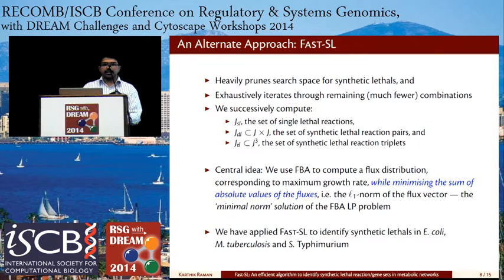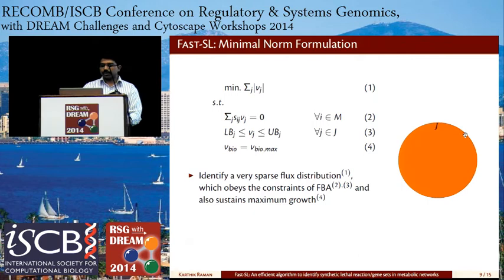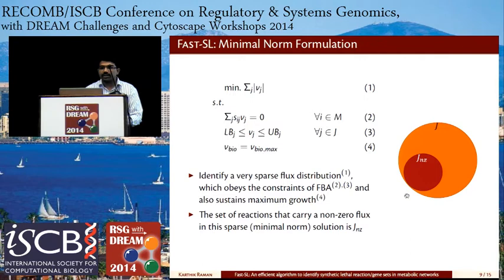We have applied FAST SL to identify synthetic lethals in E. coli, Mycobacterium tuberculosis, and Salmonella. The minimum norm formulation minimizes the sum of the flux vector such that regular FBA constraints are obeyed and it also sustains the maximum growth identified by the FBA formulation. Only a small subset of reactions J_NZ admit a non-zero flux in this sparse solution.